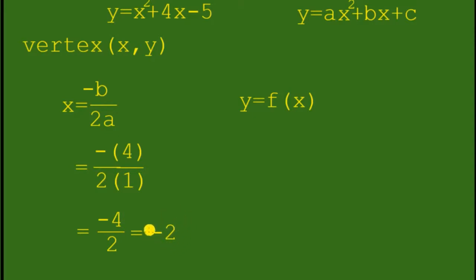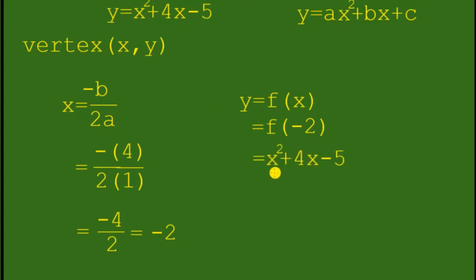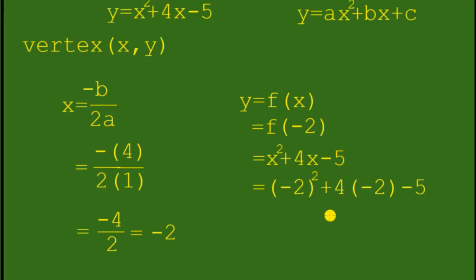Now we will use this value of x in f of x. So we have f of negative 2 — substitute the value of negative 2 in this equation: x squared plus 4x minus 5 becomes negative 2 squared plus 4 times negative 2 minus 5. Simplify: you have 4 minus 8 minus 5.